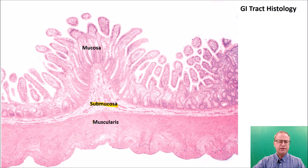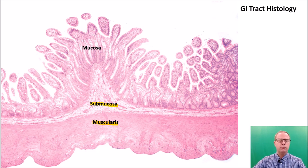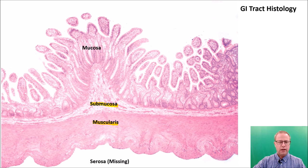The muscularis, as the name implies, is muscular tissue — for the most part smooth muscle, unless we're talking about the back of the pharynx or near the rectum and anus where there's some skeletal muscle. The serosa, the fourth layer, is missing from this slide, but it would be a connective tissue layer surrounding the other three and uniting them to the body wall.